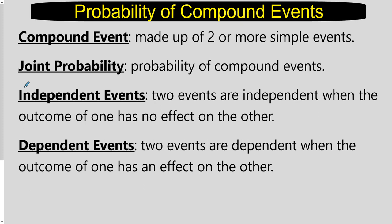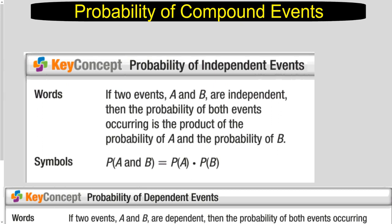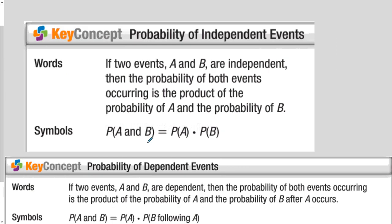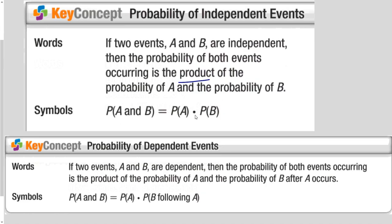Two events are independent if the outcome of one has no effect on the outcome of the other. If two events are independent, then the probability of both events occurring is the product of the probability of A and the probability of B. 'Product' means the answer to a multiplication problem, so to find the probability of A and B happening, you multiply P(A) times P(B).